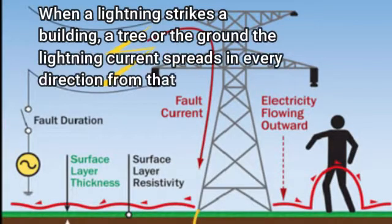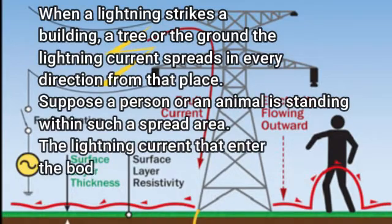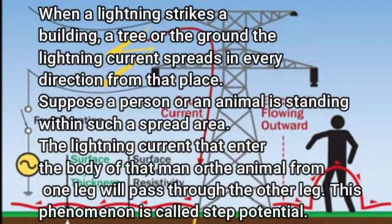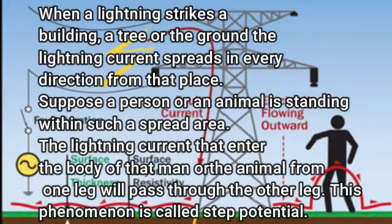Now we discuss step potentials. When lightning strikes a building, a tree, or the ground, the lightning current spreads in every direction from that point. If a person or an animal is standing within such a spread area, the lightning current enters the body from one leg and passes through the other leg. This phenomenon is called step potential.